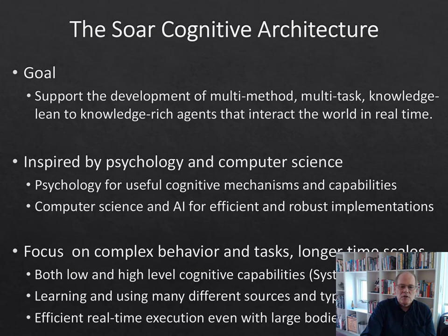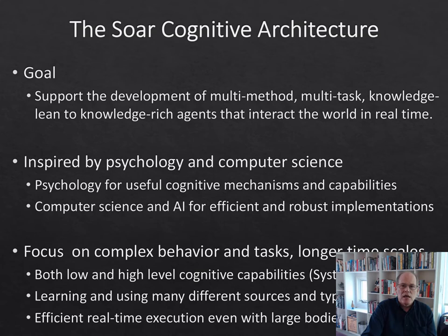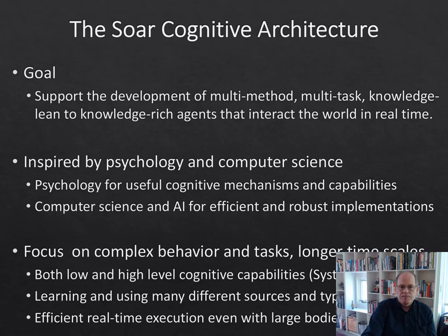What distinguishes SOAR is that we've tried to build systems that scale up to large tasks, focusing on complex behavior, building large systems that exist in the world for longer time scales. These are systems with both high-level and low-level cognitive capabilities. In terms of Kahneman's systems, SOAR supports both System 1 reasoning, which is very fast and uses implicit representations, and System 2, which involves more deliberate reasoning, planning, and metacognition. We also support many different kinds of learning — not just reinforcement learning, but also episodic, semantic, and procedural learning — with the goal of systems that are efficient in execution and scale to very large knowledge bases.